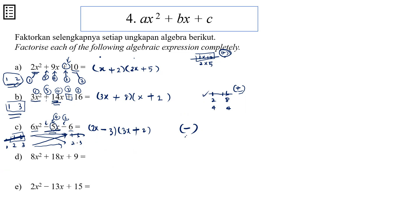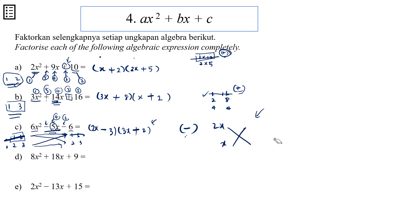We were a bit unlucky here because we had to try so many times — but that is the only way. You could use a cross method, but it's the same concept and even more messy. That's why I only use the two-bracket method and adjust from there.